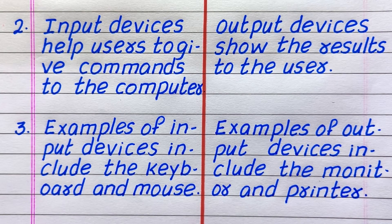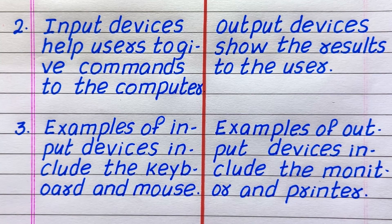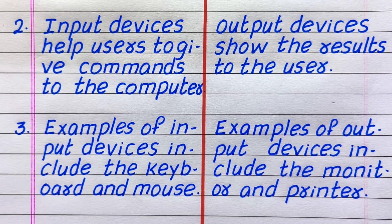Second difference: input devices help users to give commands to the computer, while output devices show the results to the user. Third: examples of input devices include the keyboard and mouse. Examples of output devices include monitor and printer.